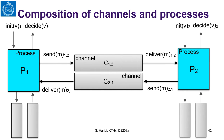When we compose automata, we look at all output actions of components and see if there are matching input actions. The output action send M12 of process P1 is matched with the input action of channel C12. The output action of channel C21 is matched with the input action of process P1, the deliver M21. Similarly, the output action of channel C12 matches the input action of process P2, and the output action of P2 matches the input action of channel C21. When we do a composition, these matched input actions are no longer part of the composition — they disappear.